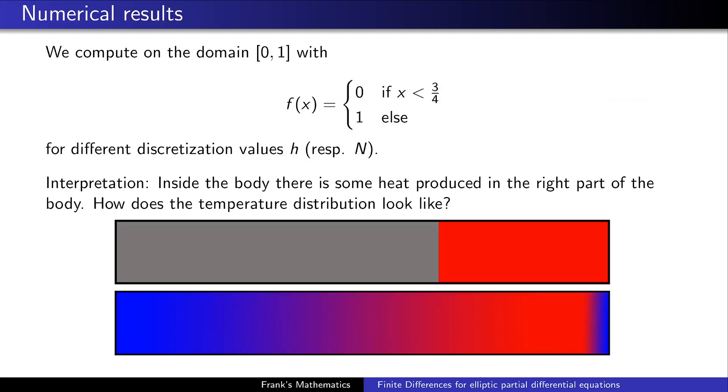Now it's time for some numerical results. We want to take a look at the following function f which is the right hand side of our Poisson equation. The function f is zero if x is less than three over four, otherwise it is one. Before we start looking at the numerical results we ask ourselves what are we expecting. I told you that the Poisson equation models the heat distribution inside a body. You can see the body here, and inside the body I draw the function f. Gray means the function f is zero and red means it is one. So we have some heat production on the right side of the body.